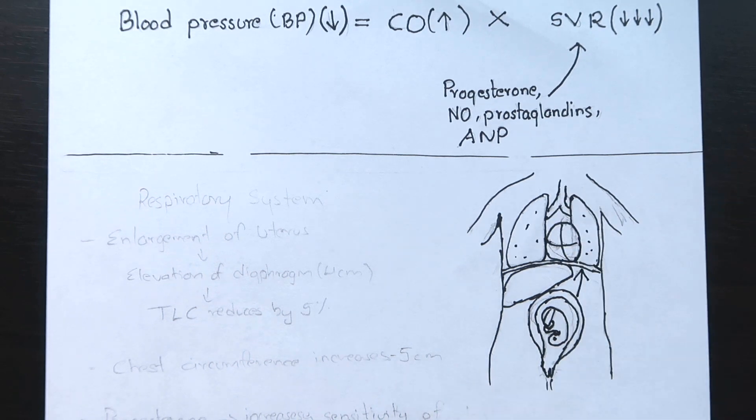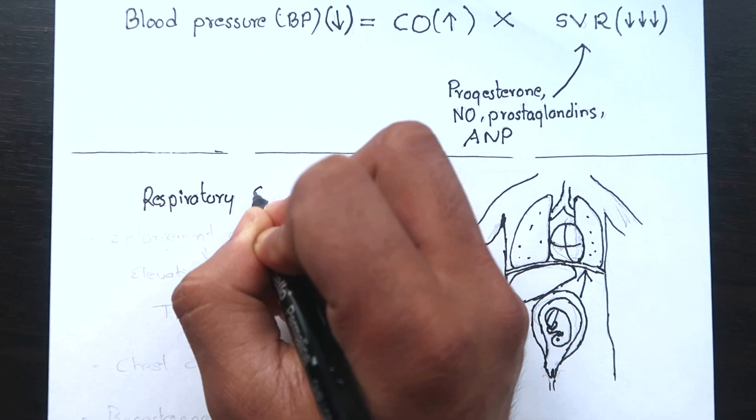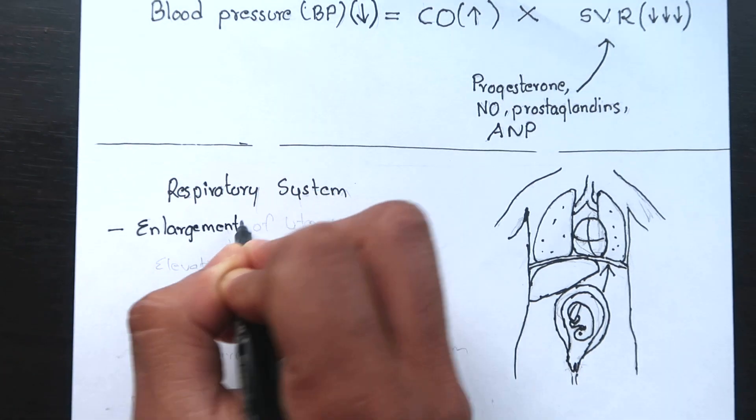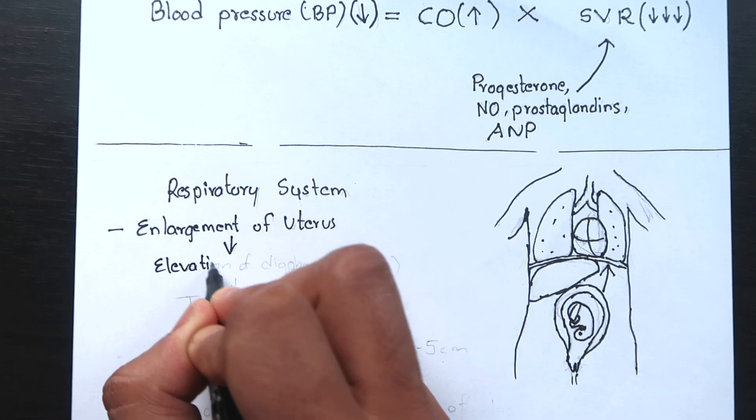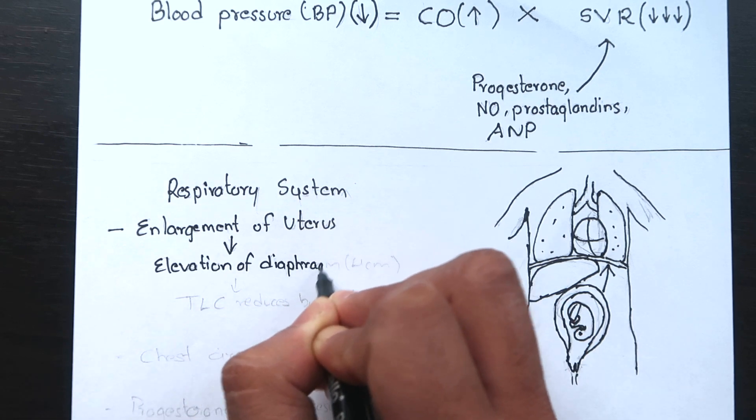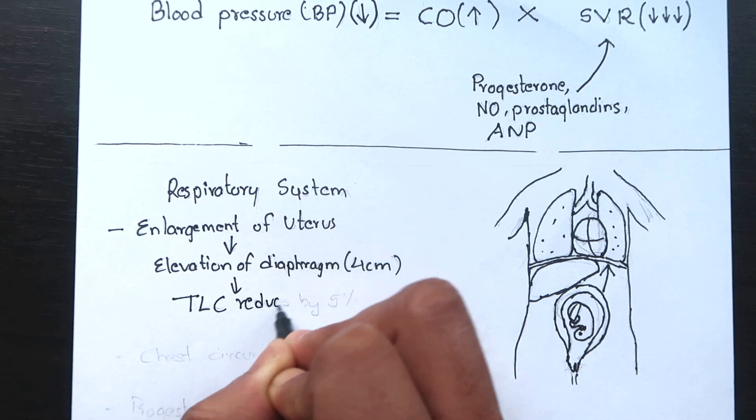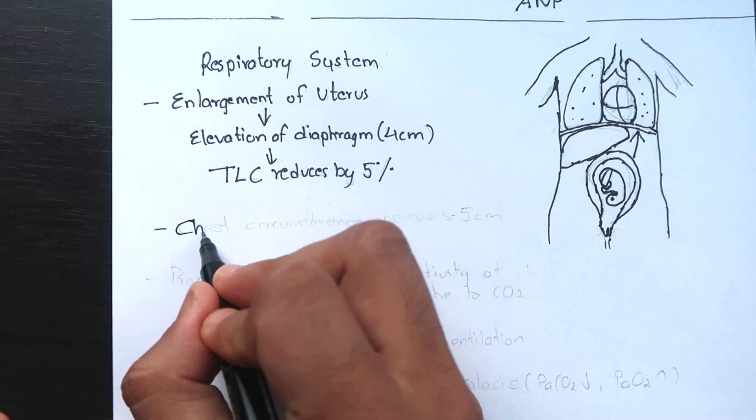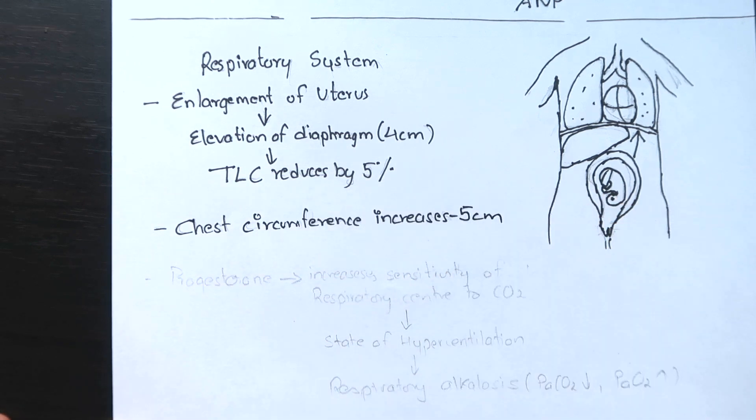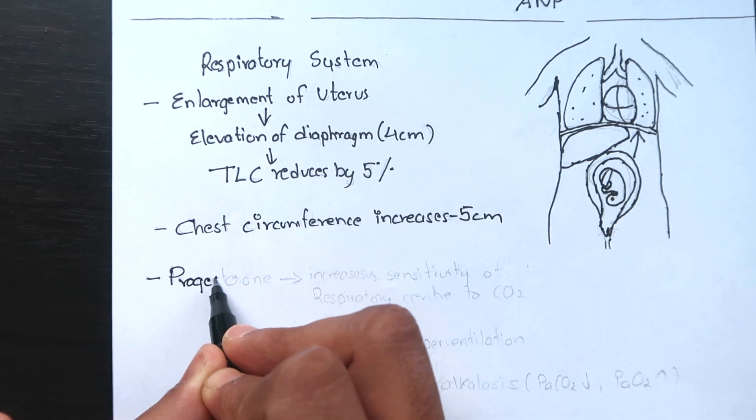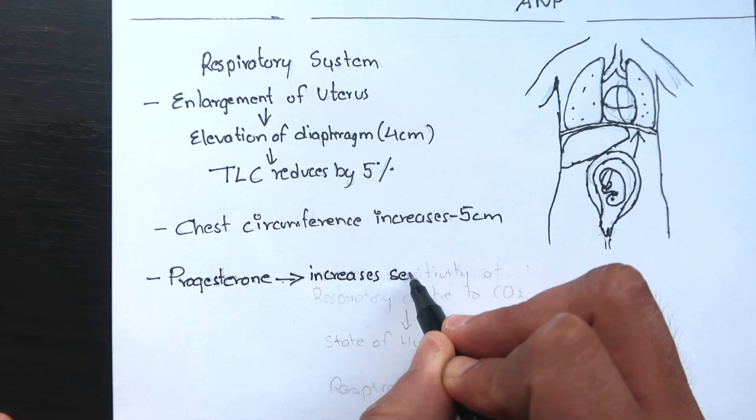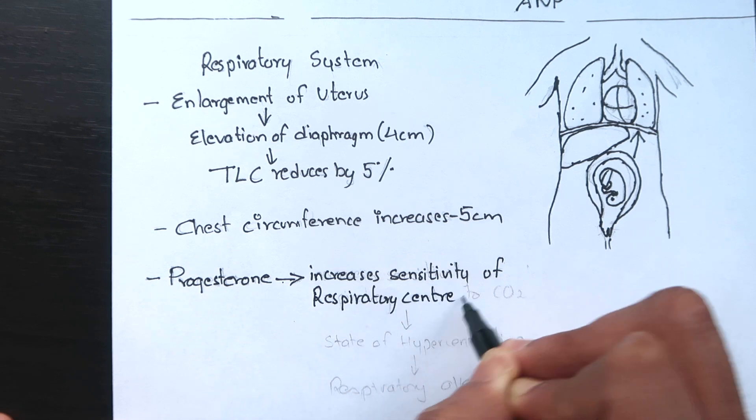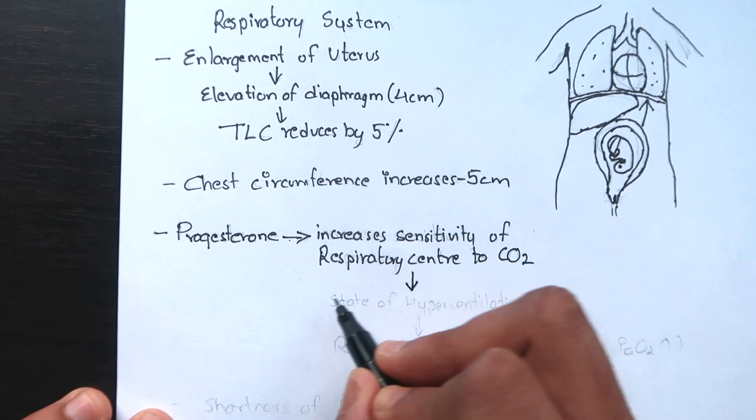In the respiratory system, with the enlargement of the uterus especially in the later months, there is elevation of the diaphragm by 4 cm. Total lung capacity is reduced by 5% due to this elevation and the breathing becomes diaphragmatic. Chest circumference increases by 5 cm. Progesterone acting on the respiratory centers increases its sensitivity to the carbon dioxide. This leads to state of hyperventilation and respiratory alkalosis.